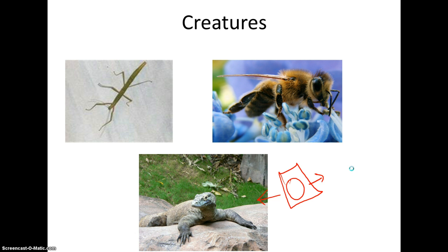Now what creatures undergo this? Well, we have the Indian stick bug, we have the honey bees, some honey bees, aphids and so on. And then we have the Komodo dragon which uses parthenogenesis. So we go from a female egg to a Komodo dragon.